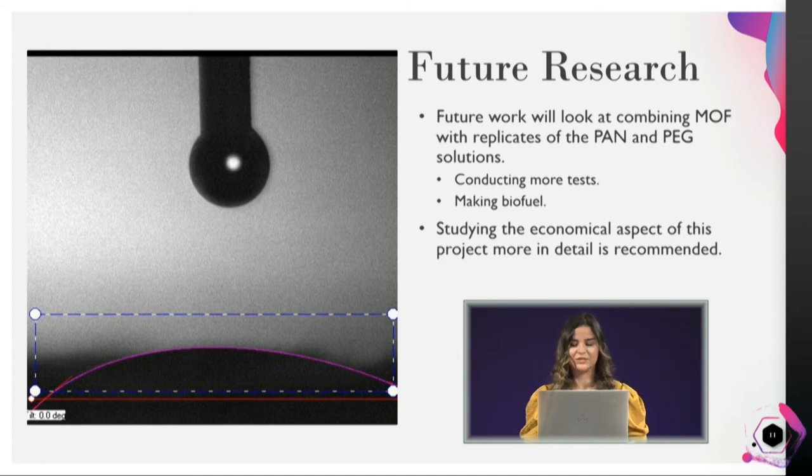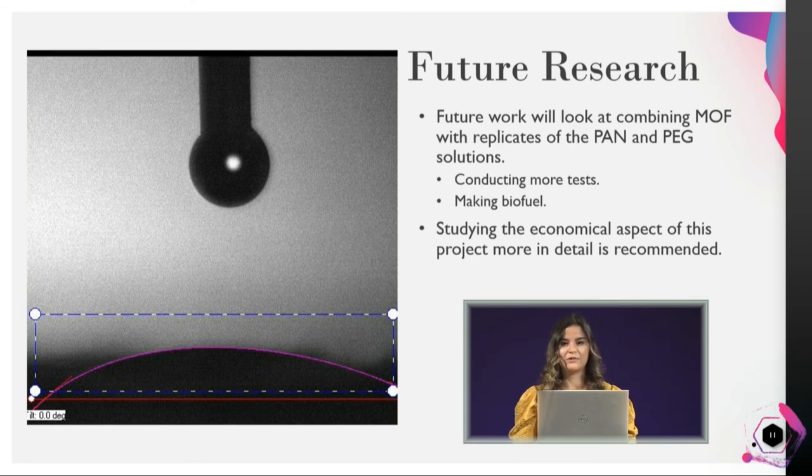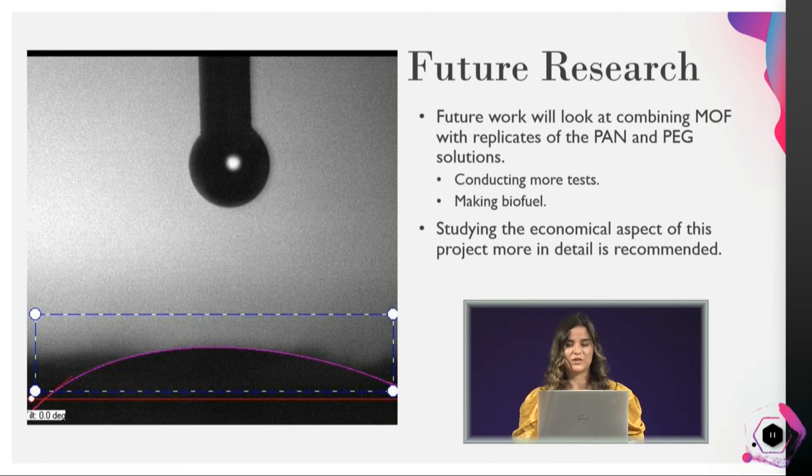Future work for this research will be looking at combining metal organic frameworks, also known as MOFs, with replicates of my PAN and PEG solutions. After these three chemicals have been combined, they will be used to fabricate nanofibers and capture carbon dioxide. The way that this works is that they have gaps in the nanofibers where the gas molecules would go in. After the carbon dioxide has been captured, they're going to be creating biofuel. Our recommendation for future research on this work is also studying the economical aspects more in-depth, because MOFs are very expensive.